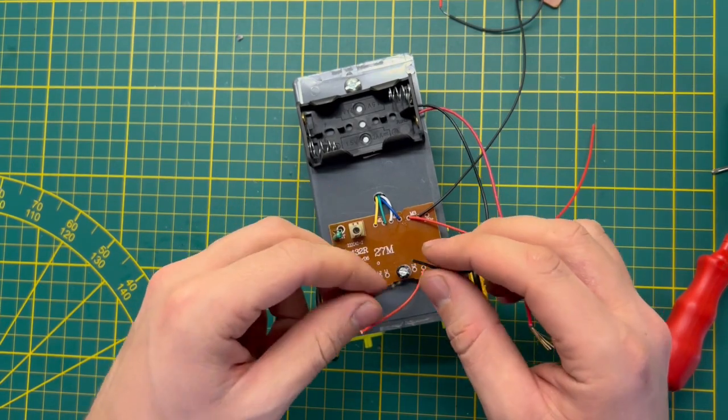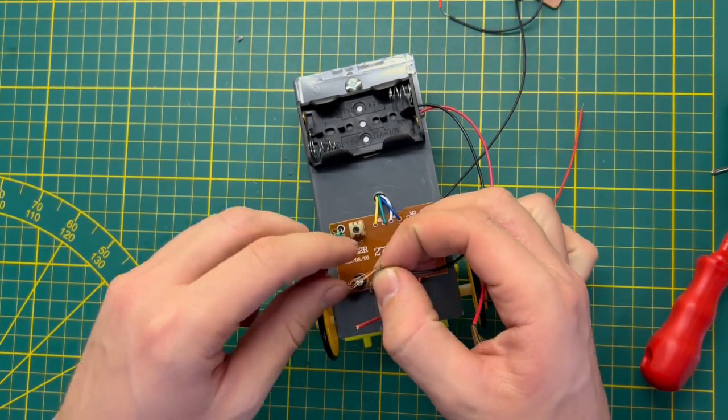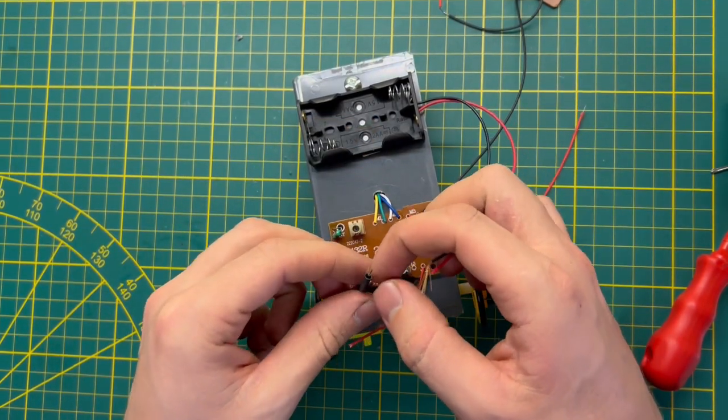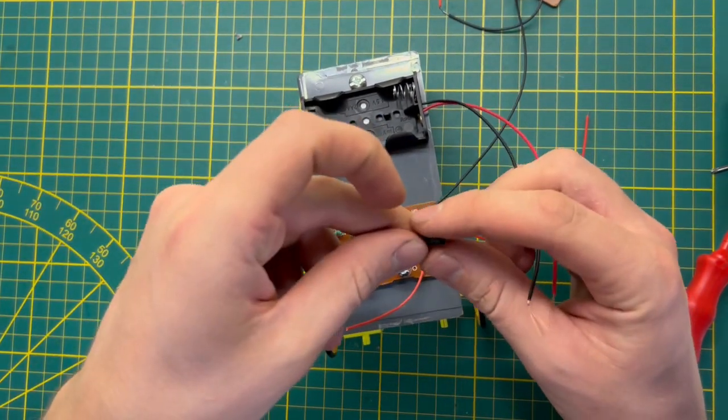Then I need to connect minus to minus, plus to plus. Also, I'm going to use the shrinking tubes to isolate contacts.